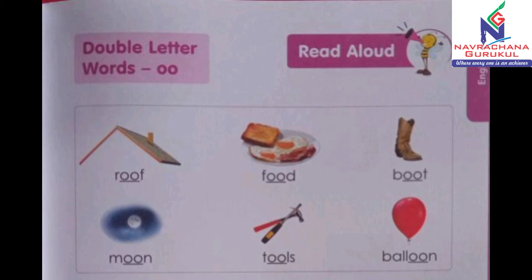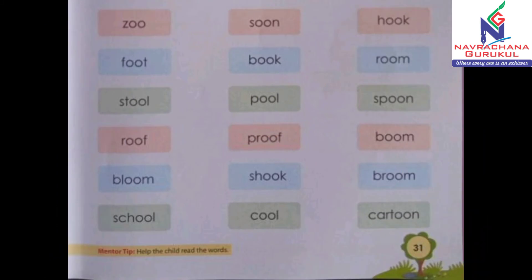Okay, so these are double letter words for double O. Let's check out some more words with double O. So children, these are the words that have double O in them — double letter words, double O. Let's read out. First is Z-O-O, zoo.